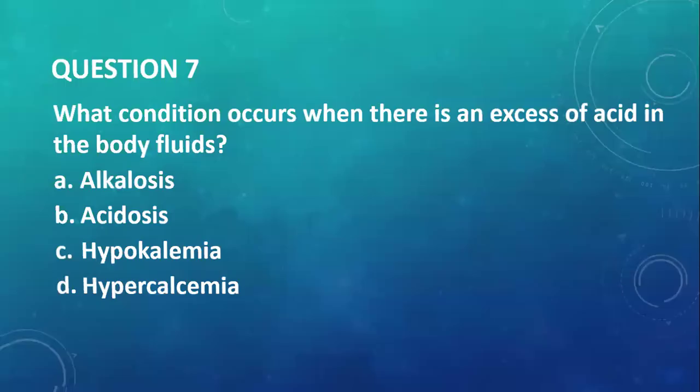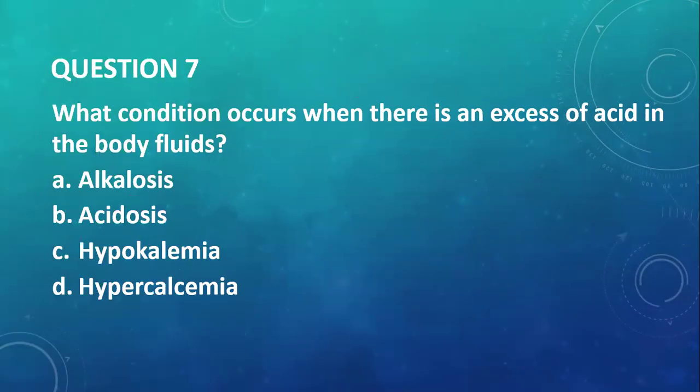Question number seven: what condition occurs when there is an excess of acid in the body? You are going to have acidosis. An excess of bicarbonate will give you alkalosis. So the answer to this is acidosis.